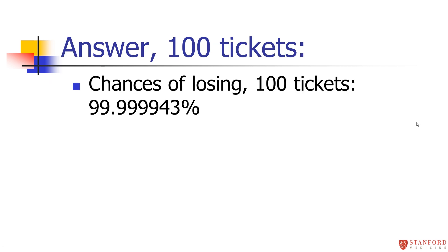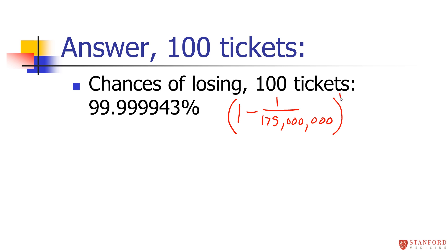What if we buy 100 tickets? We'll certainly increase our chances of winning somewhat. To find the probability of losing with 100 tickets, we raise the single-ticket losing probability — (1 − 1/175,000,000) — to the power of 100. That gives a losing probability of 99.999943%, so the probability of winning is 5.7 × 10⁻⁷. Still a very small chance of winning, even with 100 tickets.